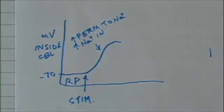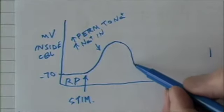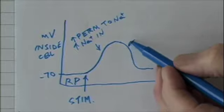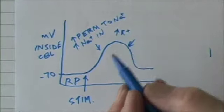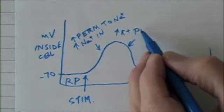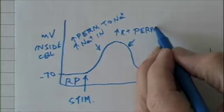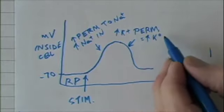Now what happens after this is there's an immediate increase in permeability to potassium. The increase in permeability—now remember, potassium is more abundant inside—leads to an increase in potassium moving out.